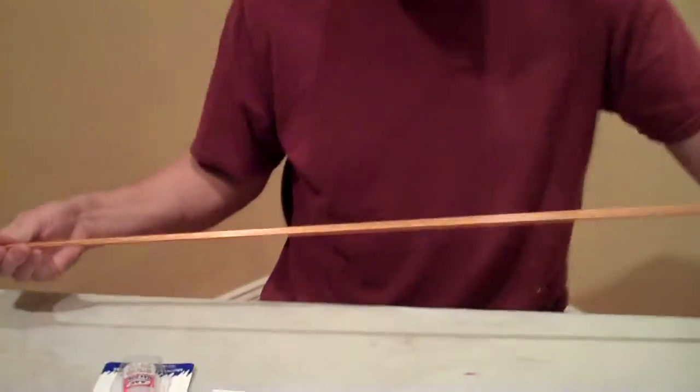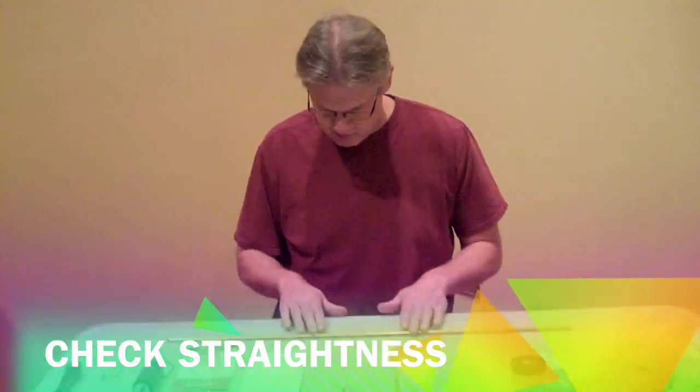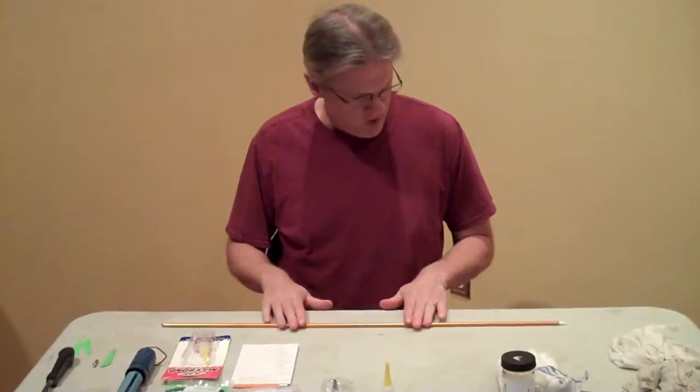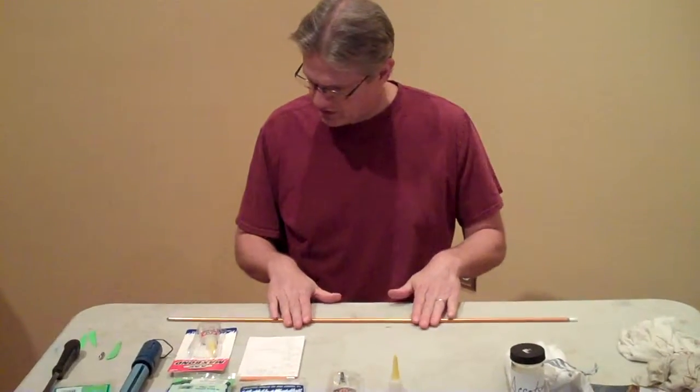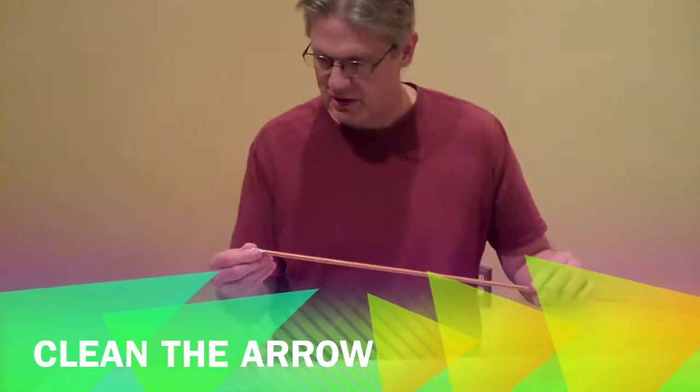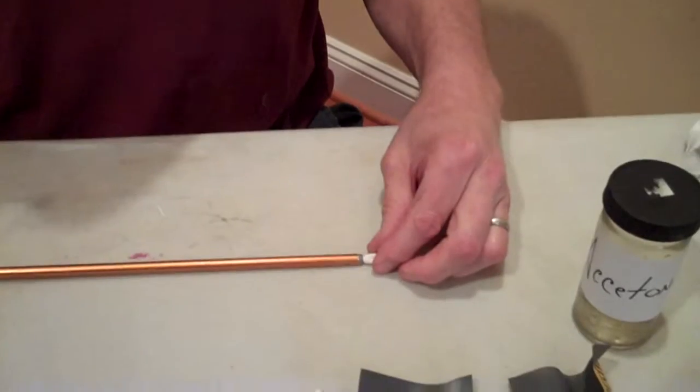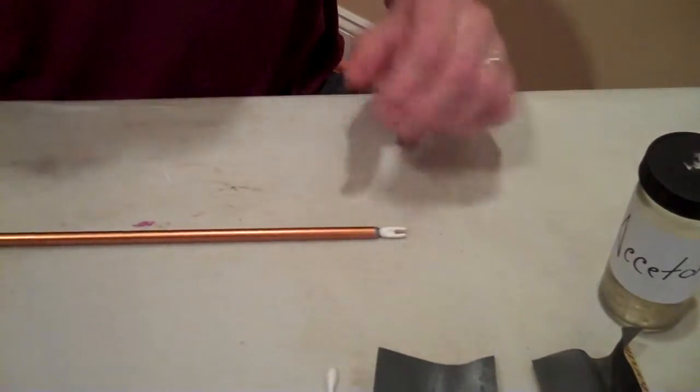At that point, now what you do is you want to check your arrow for straightness. You lay it down on the table. Make sure it rolls smoothly so it doesn't wobble in any ways at any point. This arrow is good. Now all we've got to do is clean the arrow. If you don't follow these steps, then what's going to happen is when you put your fletchings on, they have the tendency to pop off.